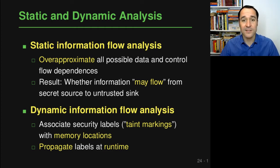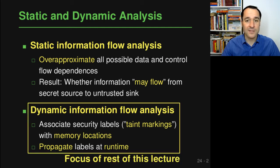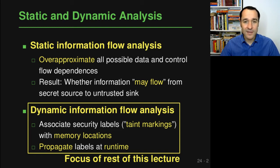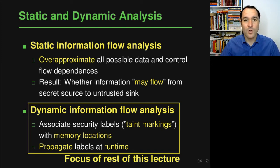The other kind — which is the focus of the rest of this lecture — is dynamic information flow analysis, where we associate security labels, sometimes called taint markings, with particular memory locations while the program is running. As the program executes operations, we propagate these labels through the program so that at runtime we can check whether some information propagates from a secret source to an untrusted sink.